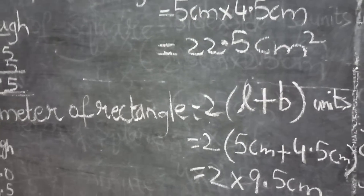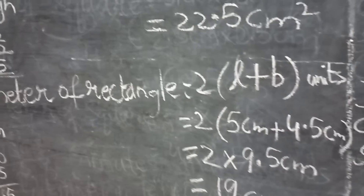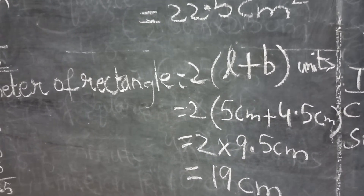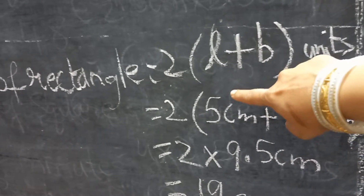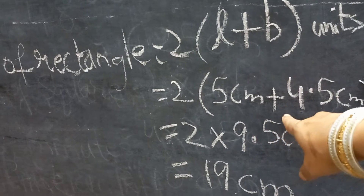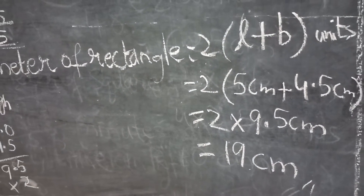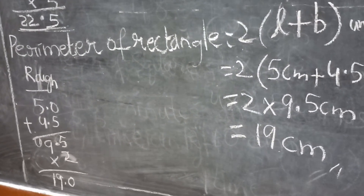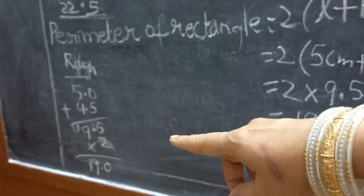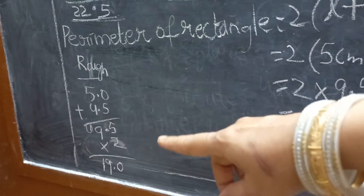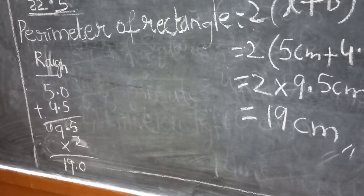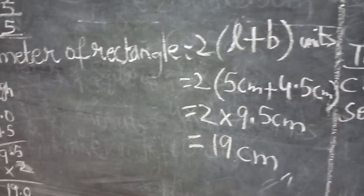Perimeter of the rectangle is two into L plus B. Substitute the values: L is 5 centimeters, B is 4.5 centimeters. Five plus four — decimal after, zero plus five is five, four plus four is eight — wait: 5.0 plus 4.5 is 9.5. Now multiply with two: two fives are ten, two nines are eighteen, eighteen plus one is nineteen. So perimeter is 19 centimeters.